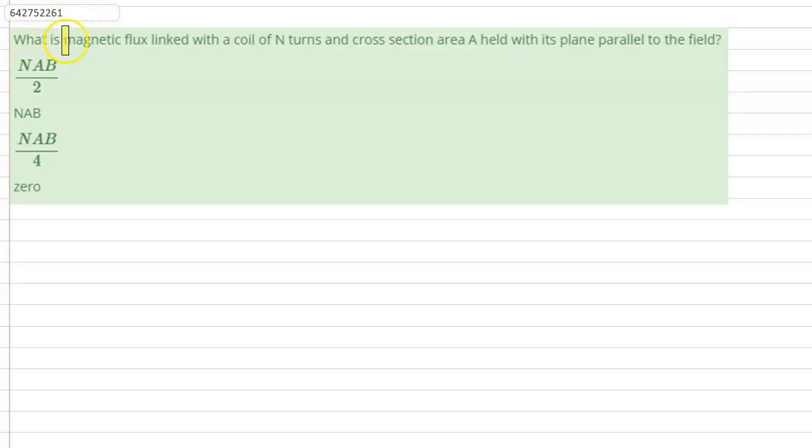Hello everyone. What is the magnetic flux linked with a coil of n turns and cross-section area A, held with its plane parallel to the field? The question is asking us to find out the magnetic flux linked with a coil which has a cross-section area A and n turns, held with its plane parallel to the field.